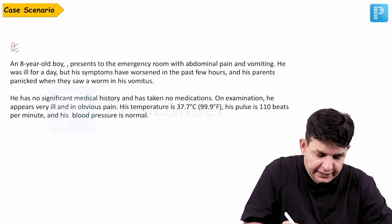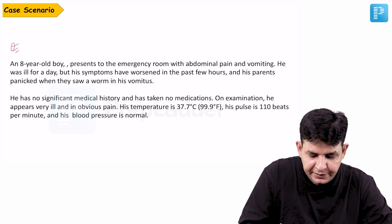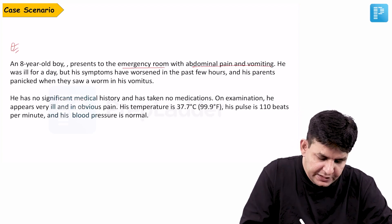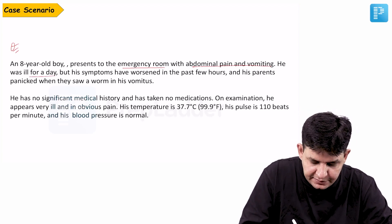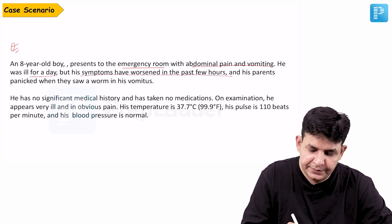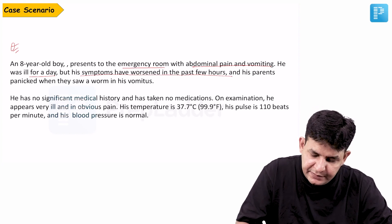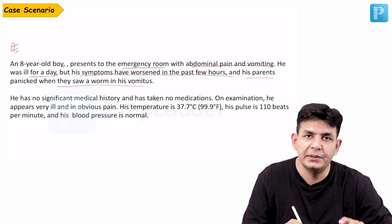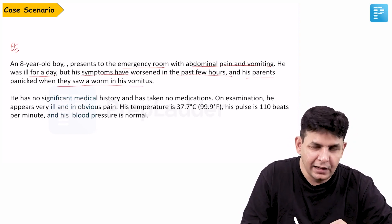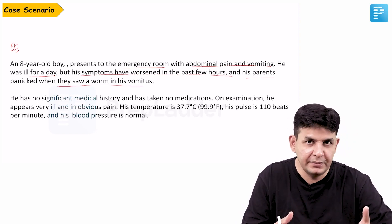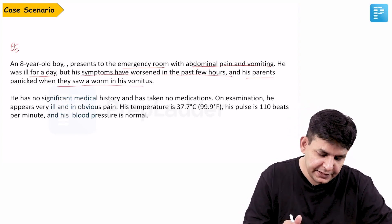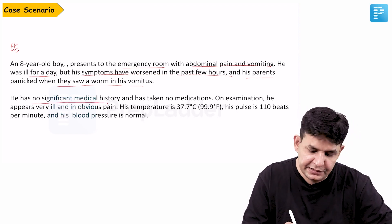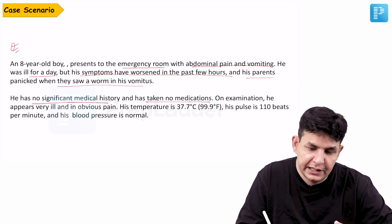An eight-year-old boy presents to the emergency room with abdominal pain and vomiting. He was ill for a day, but his symptoms have worsened in the past few hours. His parents panicked when they saw a worm in his vomitus — a number of worms can also appear in the vomitus in this particular patient. No significant medical history, has taken no medications.